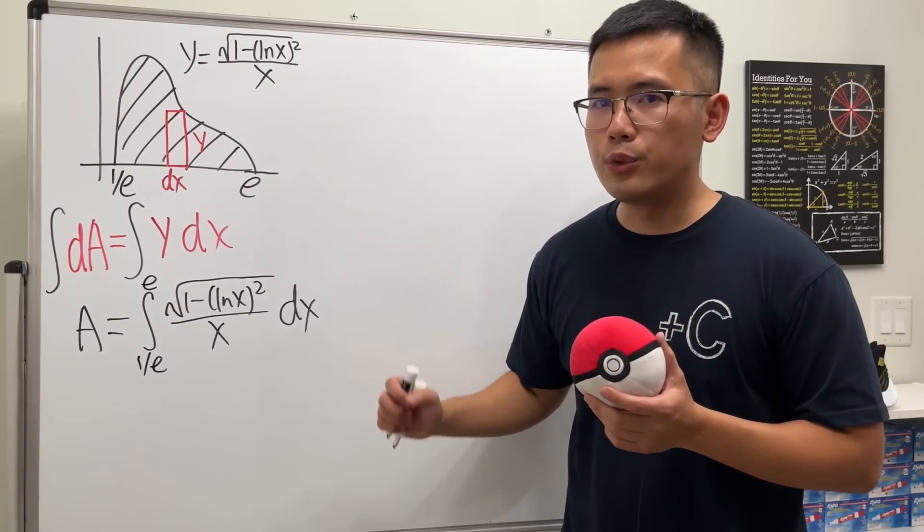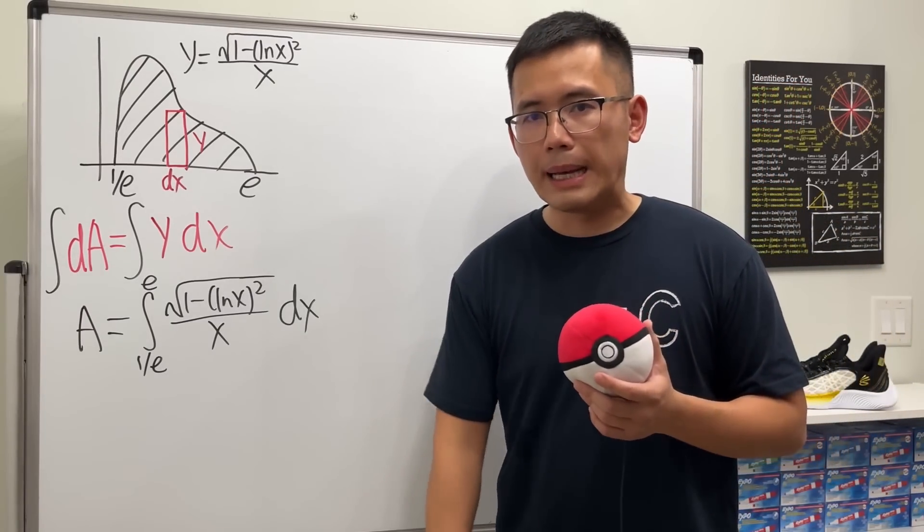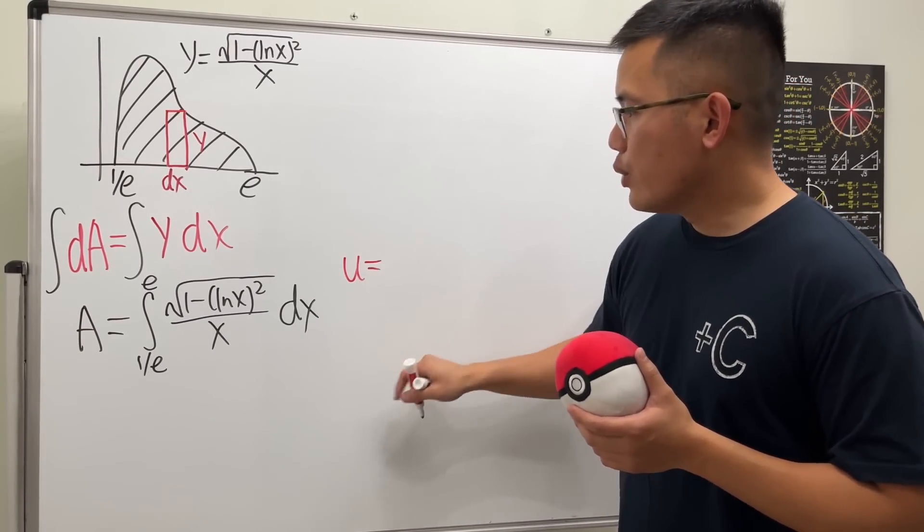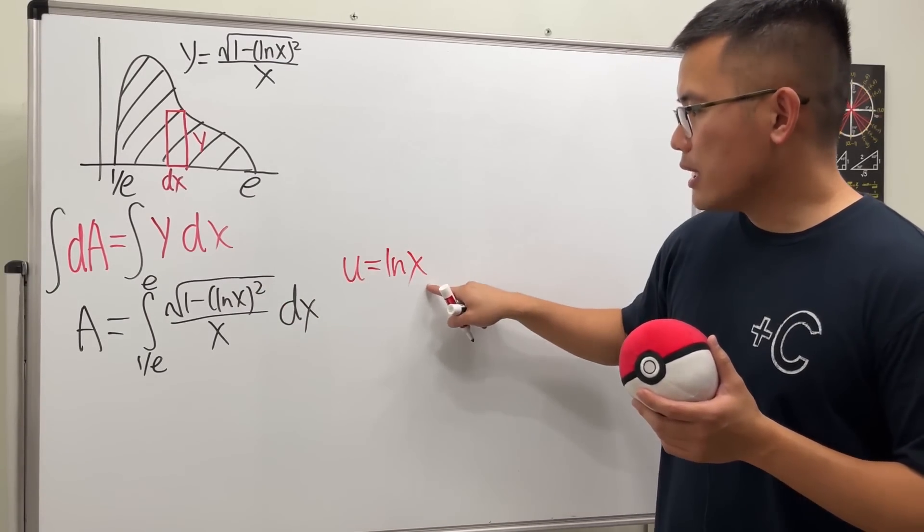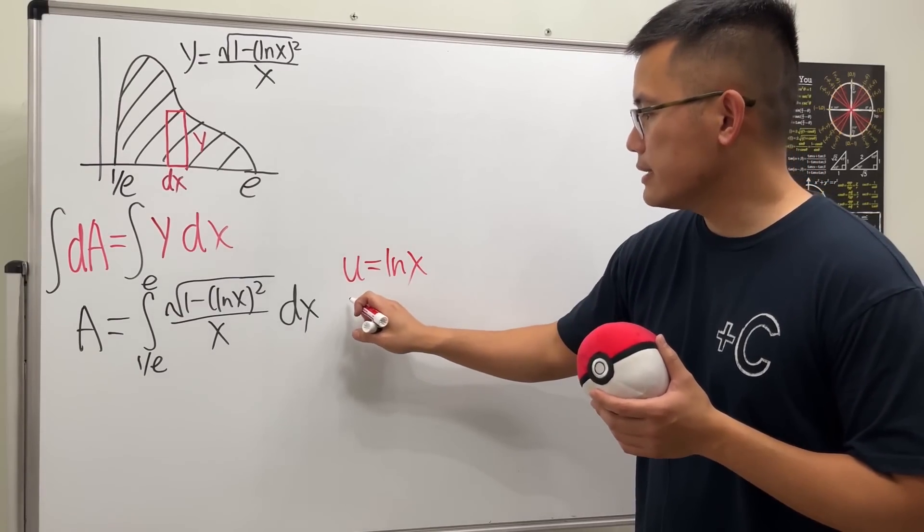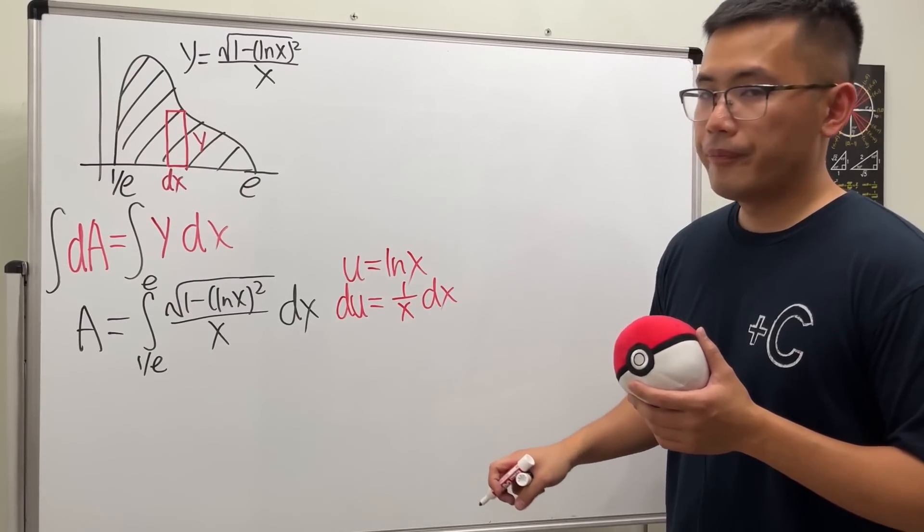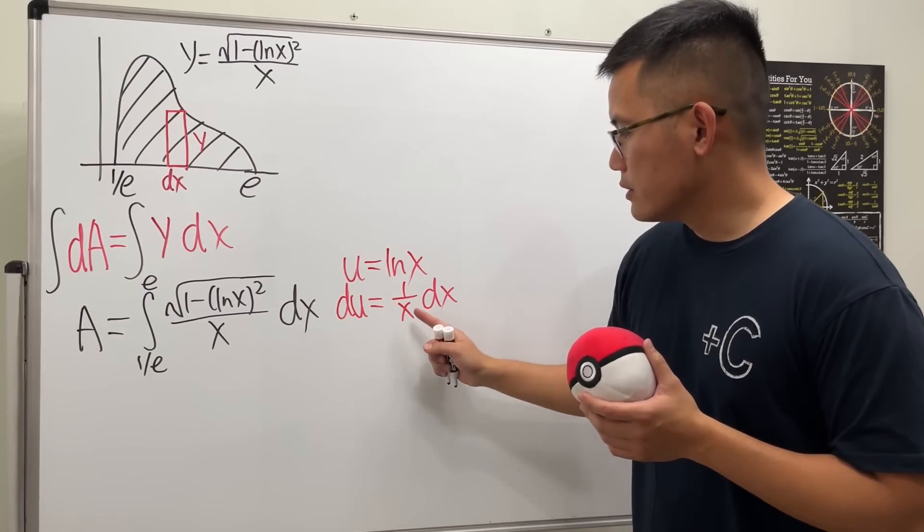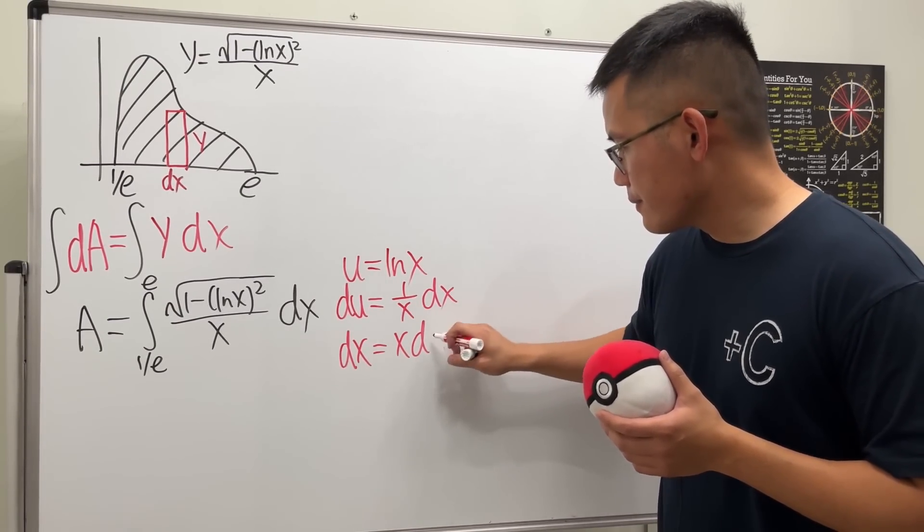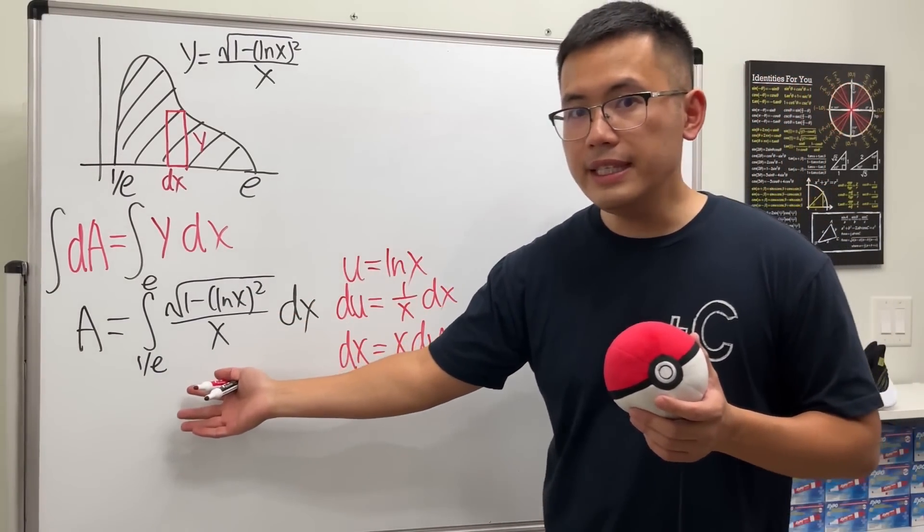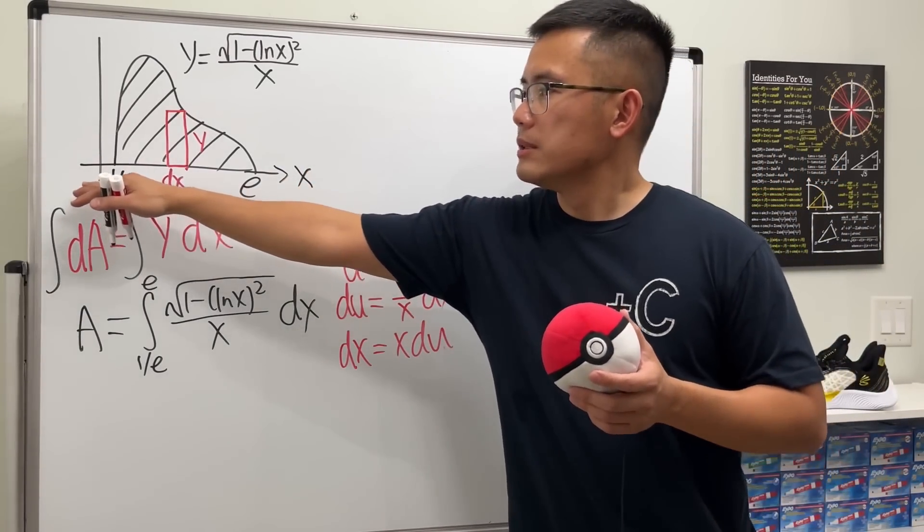Now this right here is a pretty scary looking calculus 1 integral, but it's not so bad because we can just do the so-called u-substitution. Let's go ahead and let u equal to the inner function—that's usually a good idea. Once we do a standard substitution, we're going to differentiate both sides. We get du equals the derivative of ln x, which is 1/x dx. We also need to get the dx by itself, so let's multiply the x on both sides.